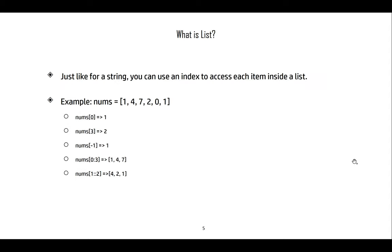Just like with strings, we can use the index to access each item inside a list. For example, given nums = [1, 4, 7, 2, 0, 1], nums[0] is 1, nums[3] is 2, and nums[-1] is the last item. We can also use index ranges: nums[0:3] gives [1, 4, 7], and nums[1::2] steps by two from index one, giving [4, 2, 1].